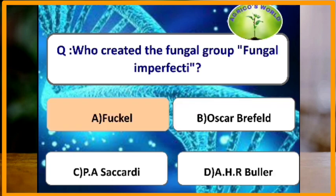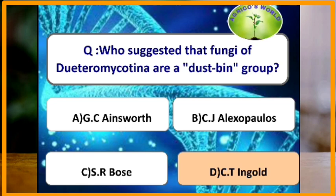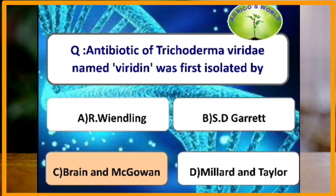Who created the fungal group Fungi Imperfecti? The term Fungi Imperfecti was given by Fuccal, and Fungi Imperfecti belongs to Deuteromycotina. Who suggested that fungi of Deuteromycotina are a destabilized group? It was proposed by CT Ingold.